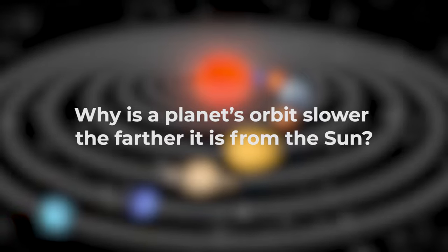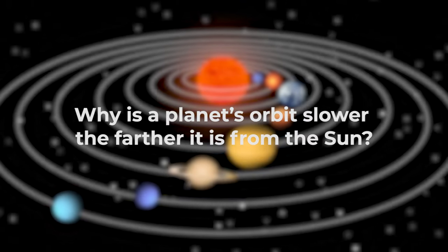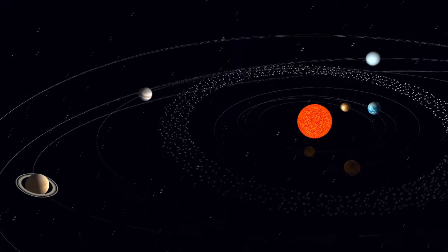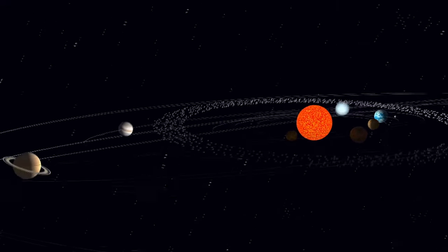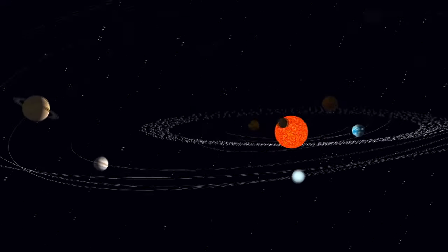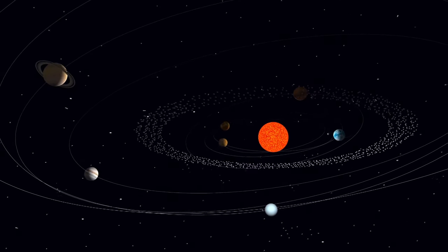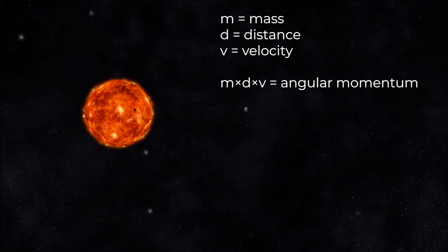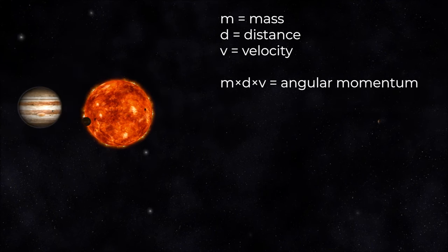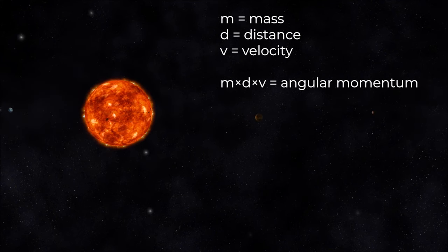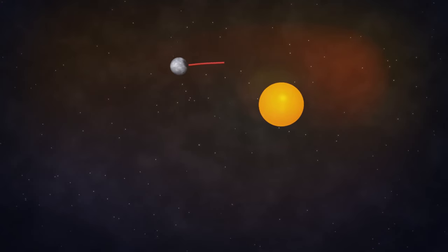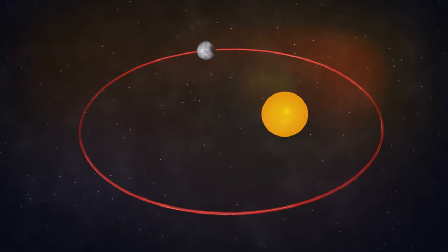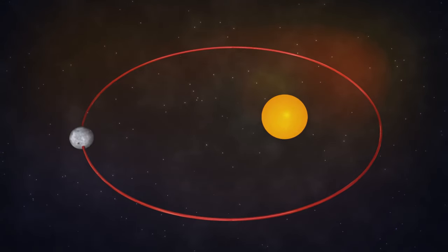Kepler's second law tells us that a planet moves more slowly when it's further from the Sun. But why should that be? As a planet orbits the Sun, it may not keep a constant speed, but it does maintain its angular momentum. Angular momentum is equal to the mass of the planet times the distance of the planet to the Sun times the velocity of the planet. Since the angular momentum doesn't change, when the distance increases, the velocity has to decrease. That means when the planet gets further from the Sun, it slows down.